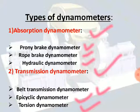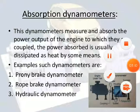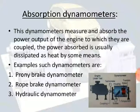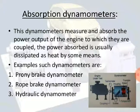The absorption dynamometer measures and absorbs the power output of the engine to which it is coupled. The power absorbed is usually dissipated as heat by some means. In a basic diagram, the dynamometer portion is coupled to the engine under test, and the power is absorbed and released in the form of heat.